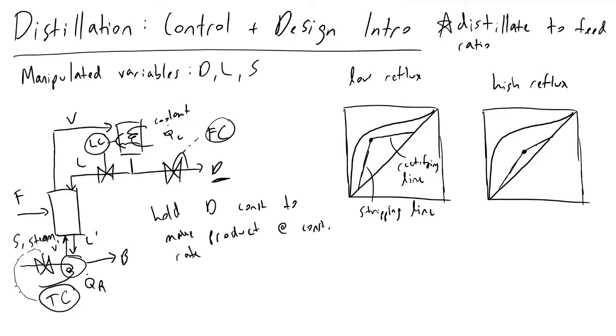The reflux ratio is defined to be how much you sent back down your column divided by your distillate going out, or the distillate flow rate going out. If we had a reflux ratio of zero we're not sending anything back down our column. If we had a reflux ratio that is very large it means that we are taking very little out or we are sending a lot back down our column.